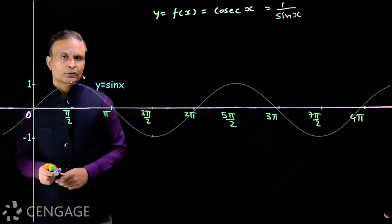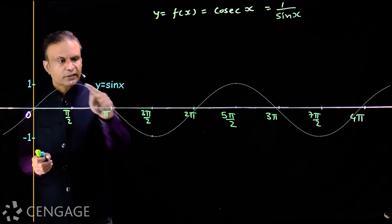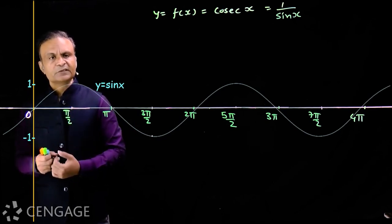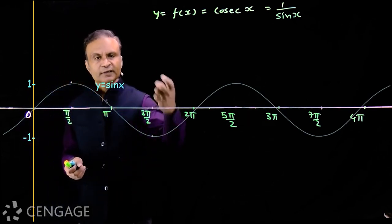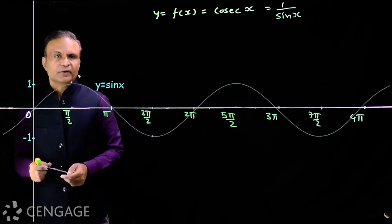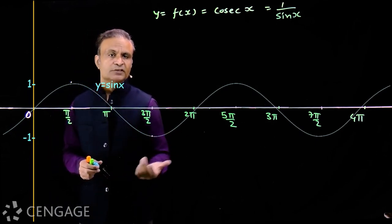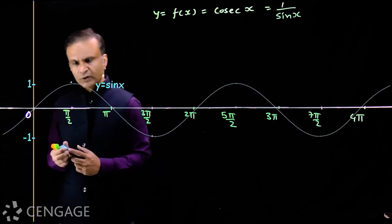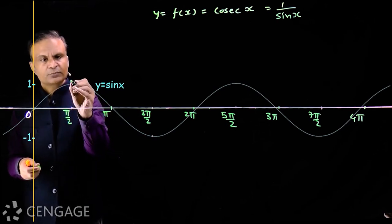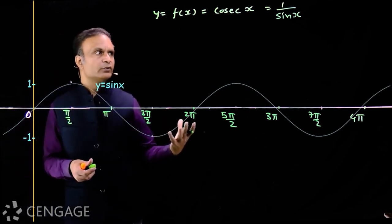Consider x = π/2. We first draw the graph of sin x, and from that we can easily draw the graph of its reciprocal function. sin(π/2) = 1, so cosec(π/2) is also 1. On the graph of cosec x we have the point (π/2, 1), because cosec(π/2) = 1.